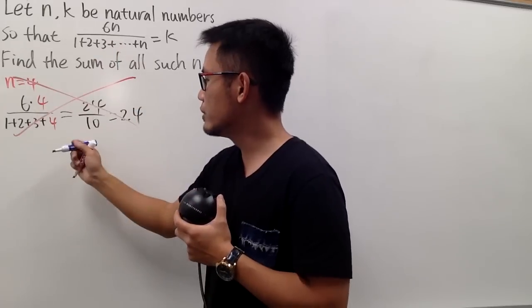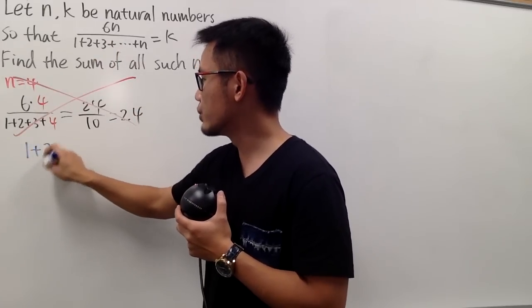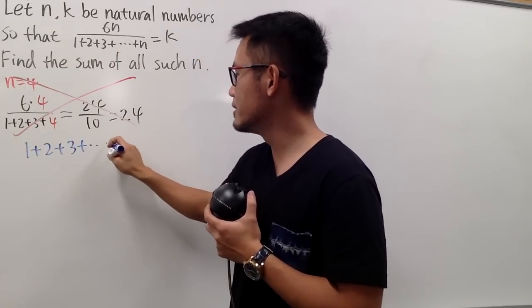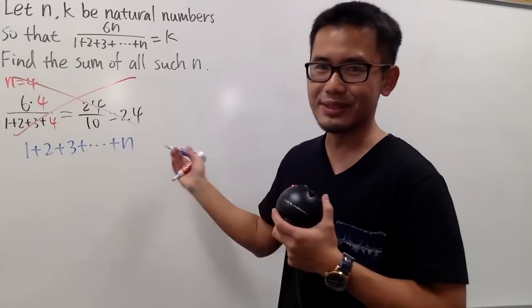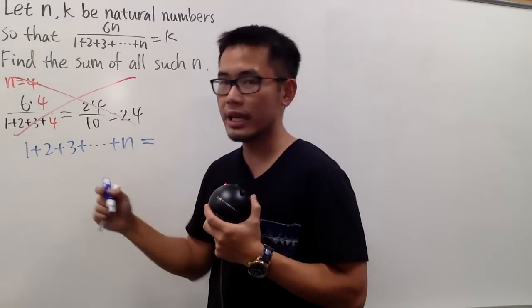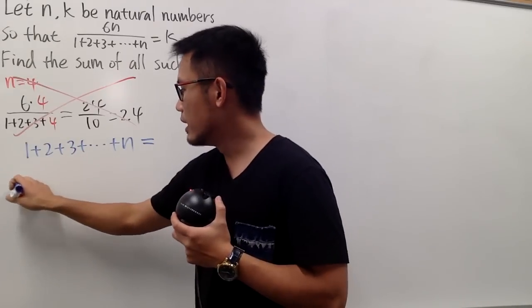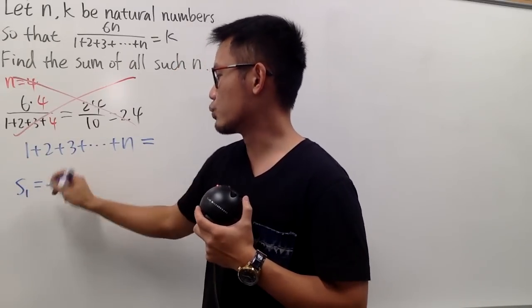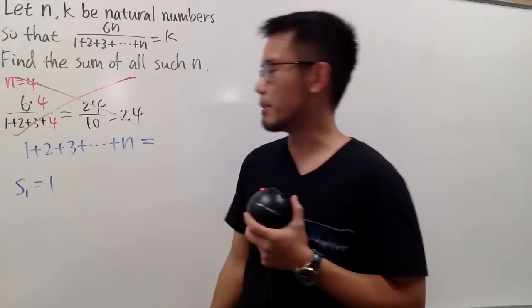So I want to just observe 1 plus 2 plus 3, and yes, I am using a blue pen. This right here. To do this, I want to get a formula for that. I am going to just look at the partial sums.